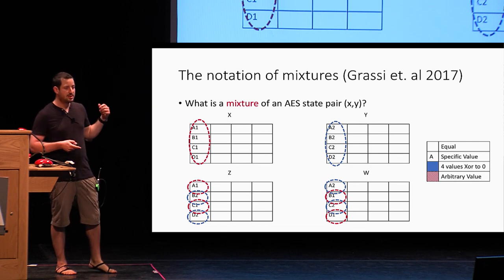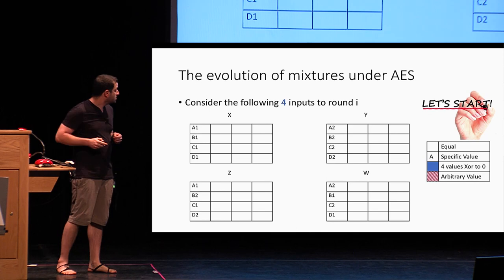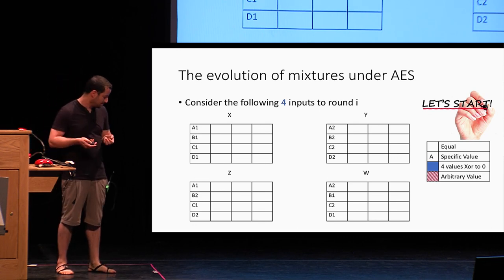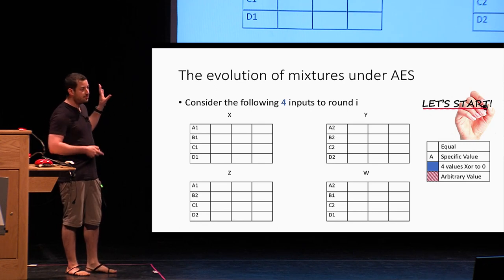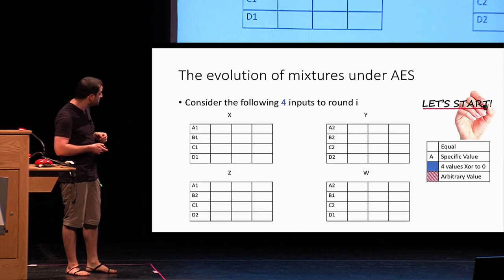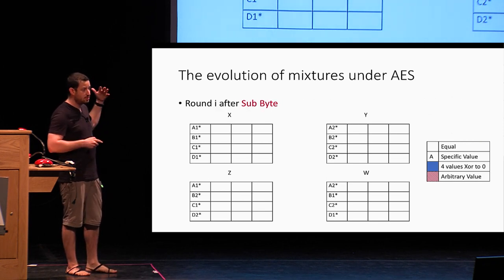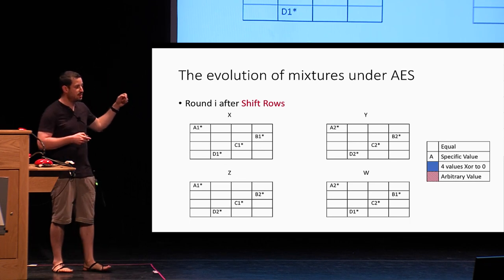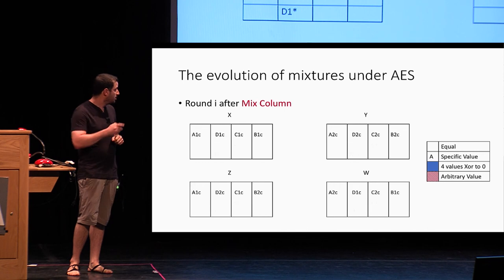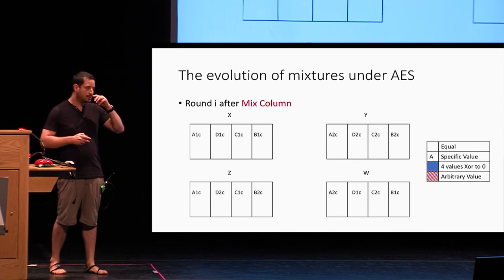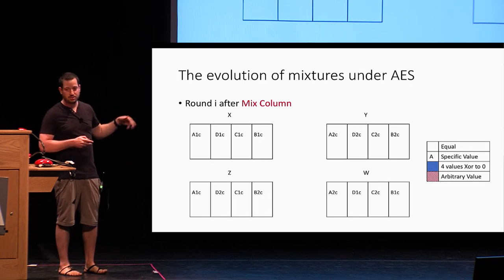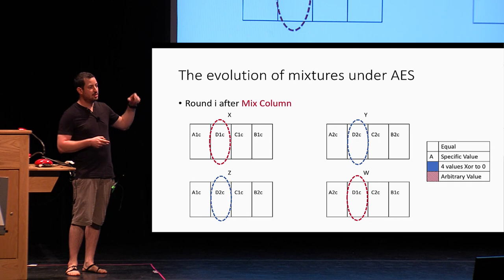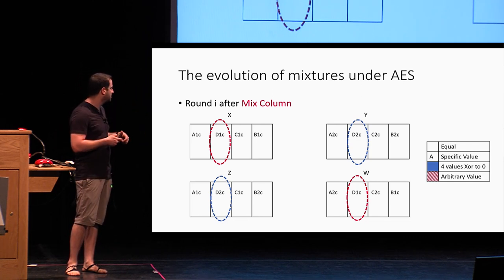Now we follow how this mixture evolves when we input it to AES. We assume we have this mixture as the input to some round I. We do the sub-byte operation — all values change but the structure remains. Then shift-rows spreads the different values to the anti-diagonal. Then the mix-column operation takes the one different byte in each column and spreads it over the entire column. However, we still have the same equality: any unordered pair of columns from X and Y equals the unordered pair of the same columns in Z and W.